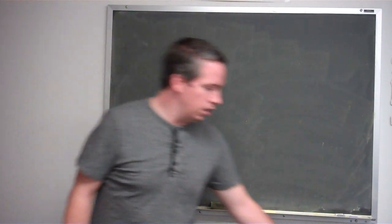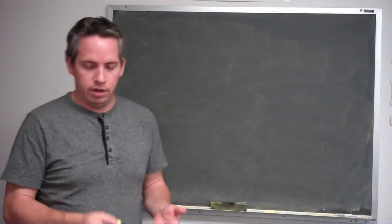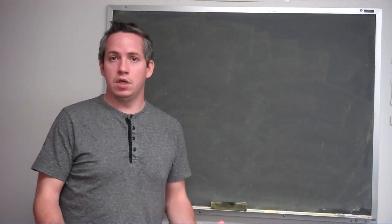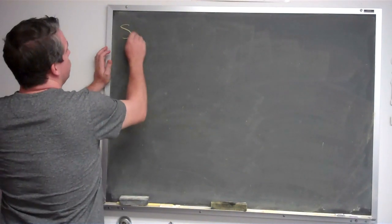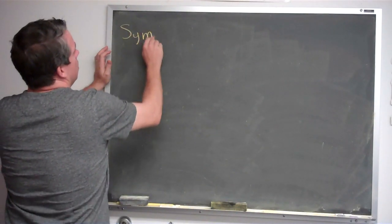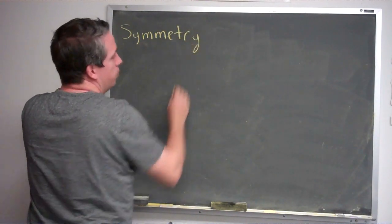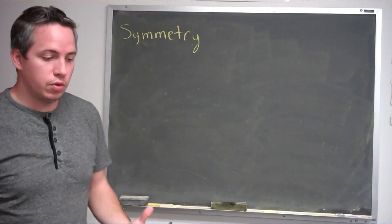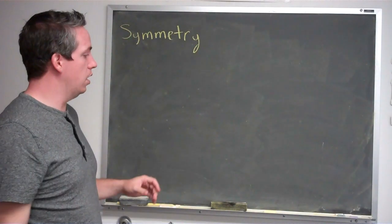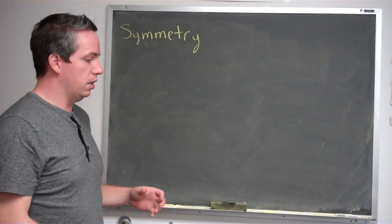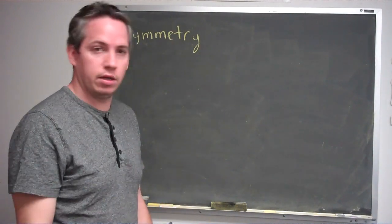Today we're going to be talking a little bit more about mathematics and art, and in particular we're going to be talking about symmetry. Symmetry is what comes to mind a lot of times when people think about math and art. Symmetry means that we're going to have the same measurements across some shift or some change with mathematical art.